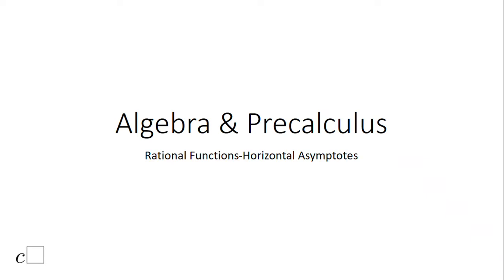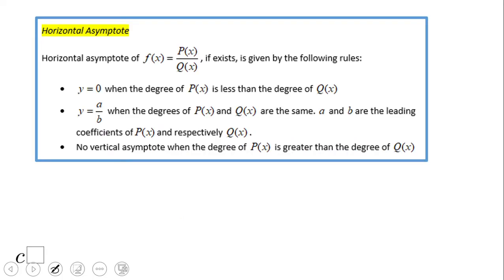Welcome or welcome back to C-Squared. In this video we're going to take a look at horizontal asymptotes for rational functions. Rational functions are nothing other than a quotient between two polynomial functions, and we'll look at how to find this horizontal asymptote.